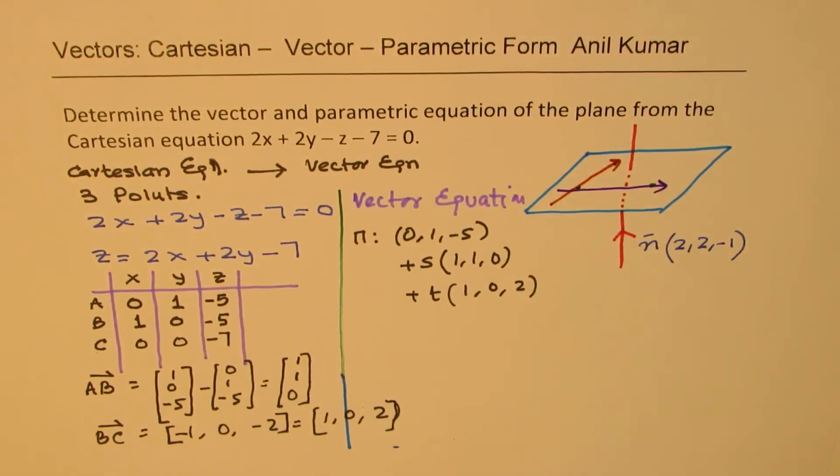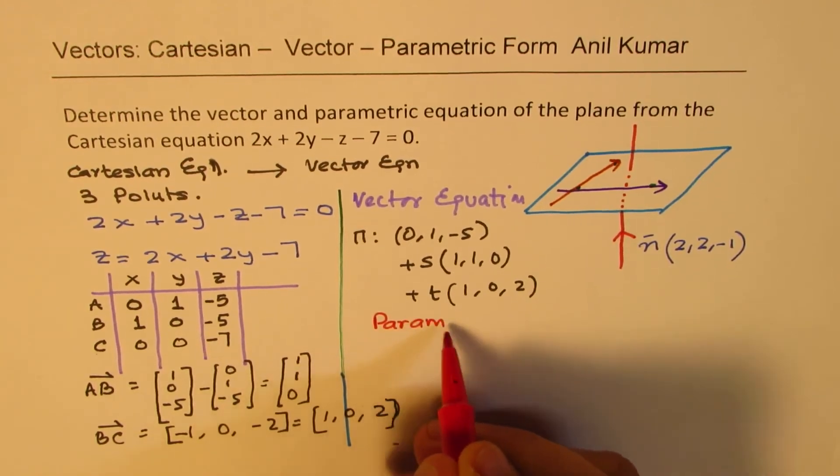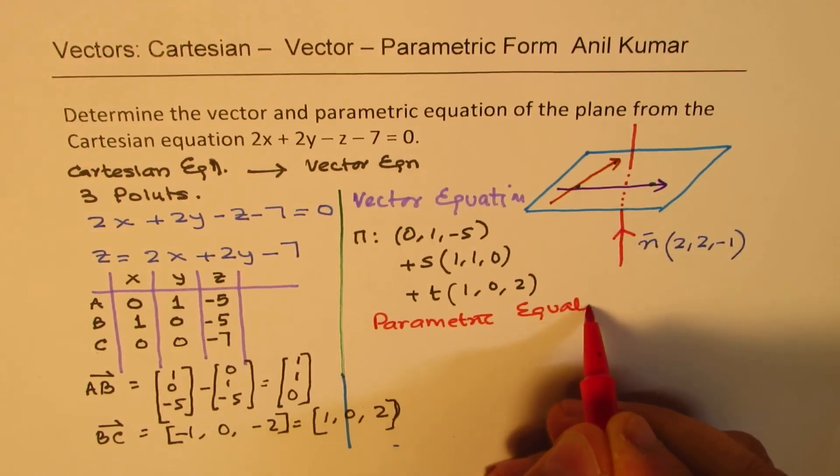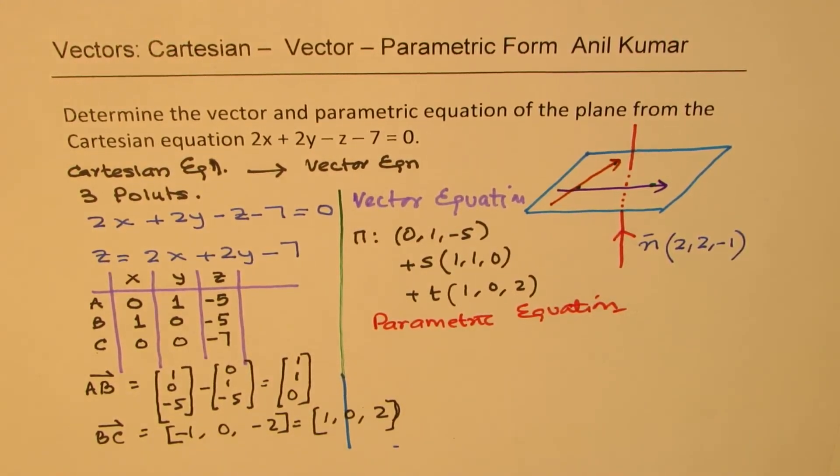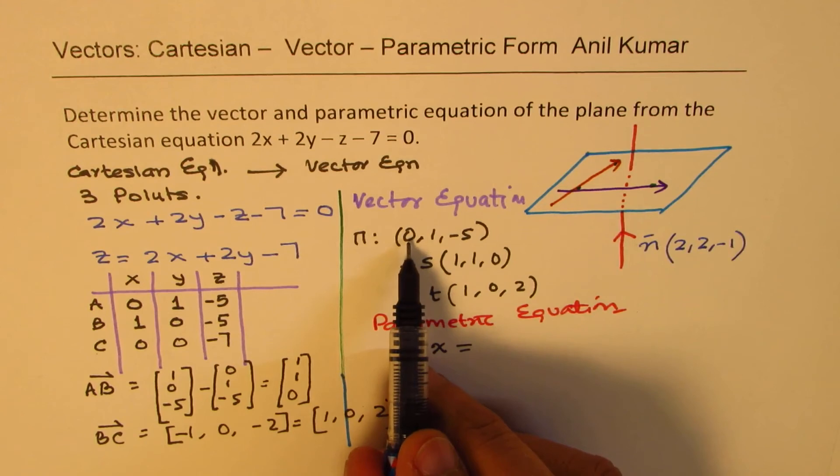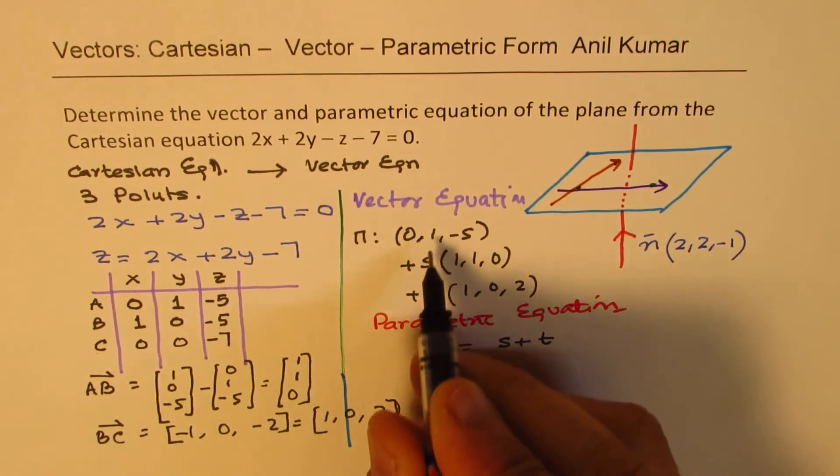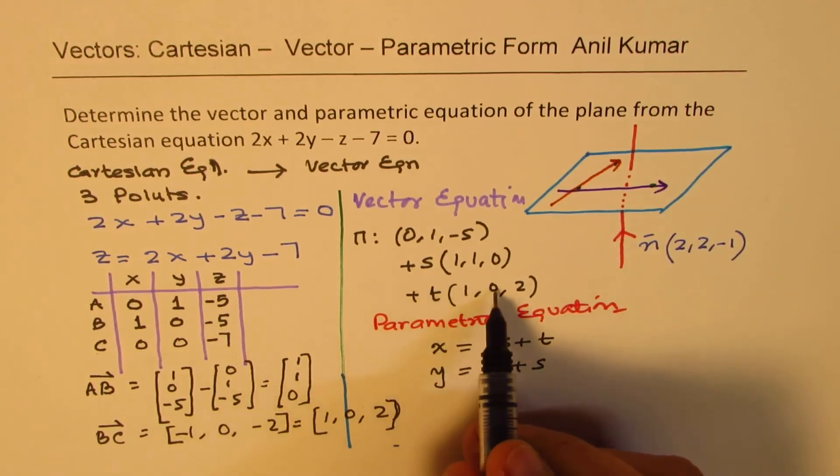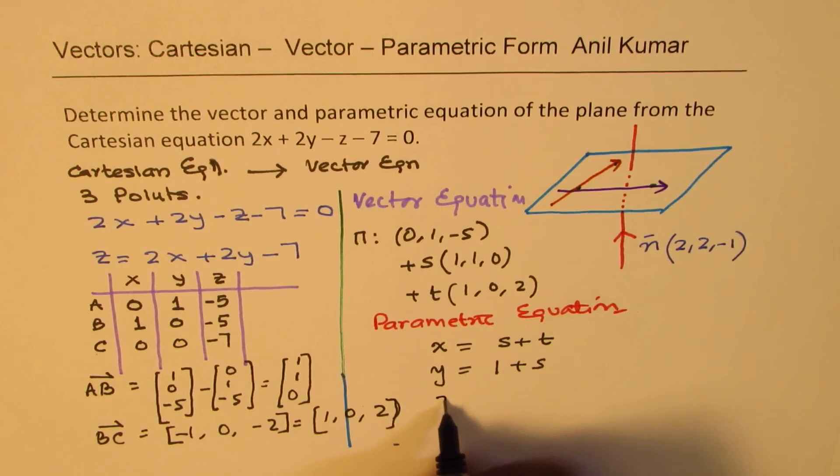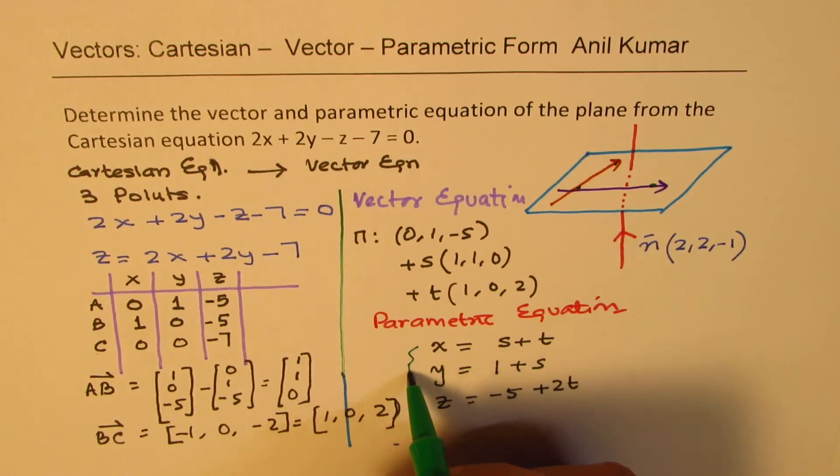Now, how do I get my parametric equation? Well, that is simple. We'll write parametric equation from a vector equation. So, from here, you can clearly understand that these equations are not unique, but scalar equation is absolutely unique. So, from our vector equation, we can say x is equal to s plus t, y is equal to 1 plus s, zero parameter, that would be 0. And z is equal to minus 5, that is 0, and this is plus 2t. So, that becomes your parametric equation.